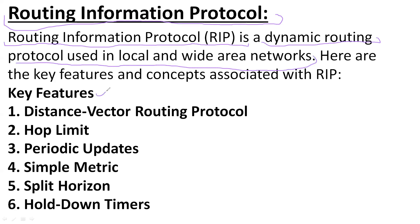There are some key features of the Routing Information Protocol. First, it is a distance vector routing protocol, meaning every decision is made on the basis of hop counts. There is a hop limit in this protocol — the hop limit is 15. After 15 hop counts, the data will not be forwarded. RIP forwards periodic updates after every 30 seconds.